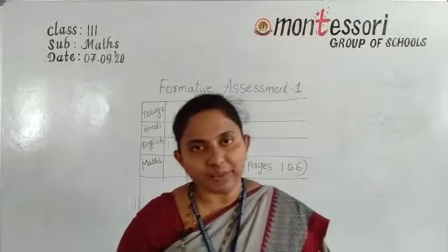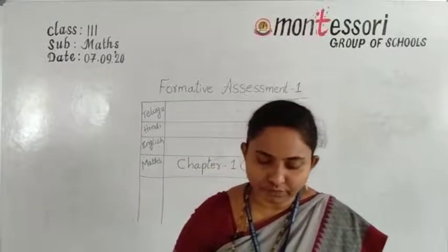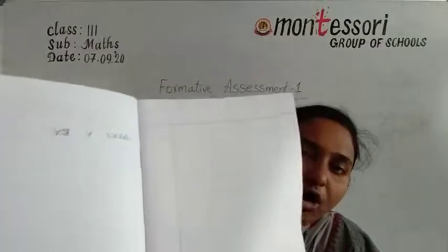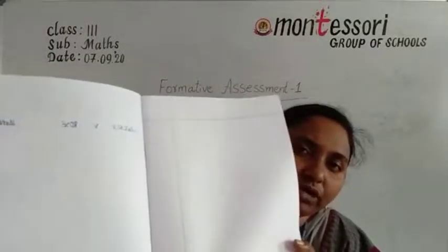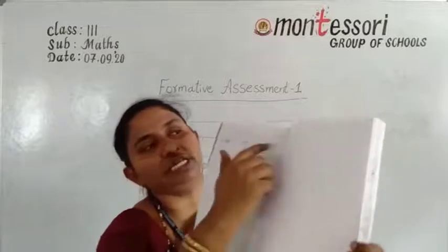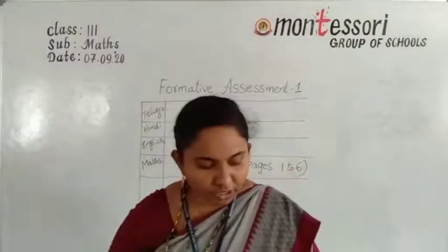Now all of you take your Max classwork book. Take your Max classwork and draw the lines like this — one horizontal and one vertical. Take a full scale margin. Put the scale here and draw the margin with pencil. In the board also I will draw it to show you.